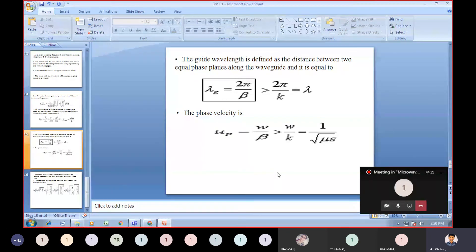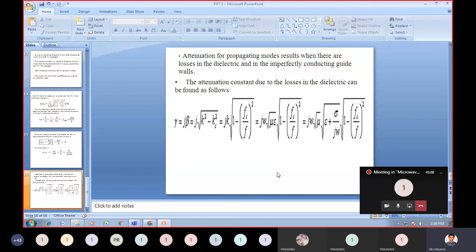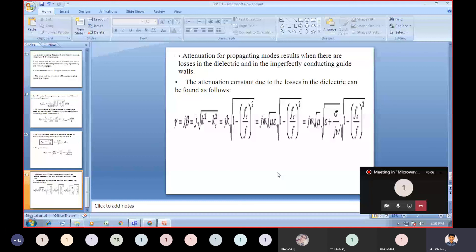The phase velocity v_p equals ω/β, which is greater than 1/√(με). The attenuation for propagation modes results when there are losses in the dielectric and in non-perfect conducting guide walls. The attenuation constant due to the losses in the dielectric can be found from this equation.